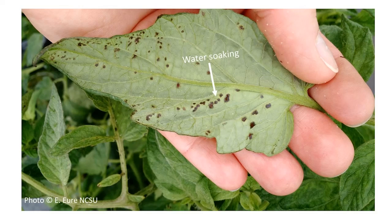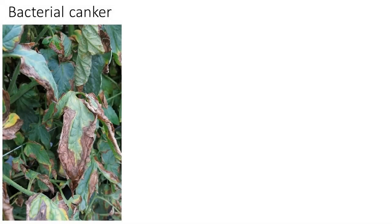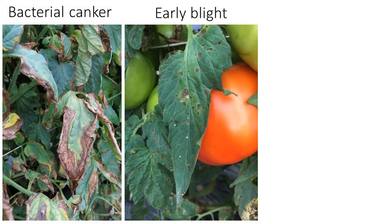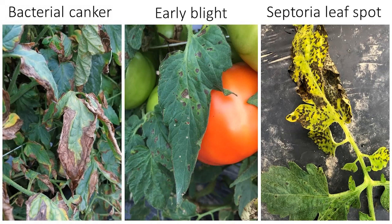Bacterial speck is another bacterial disease on tomato, but it cannot be easily distinguished from bacterial spot, although spot is more common in our region. Bacterial canker will have leaf margins that look burnt and lack the spots. Early blight, caused by a fungus, will have larger, dark brown lesions with concentric rings. Septoria and gray leaf spot, two other fungal diseases, will appear about the same size as bacterial spot, but these symptoms will not have the water-soaking or purplish leaf margin.